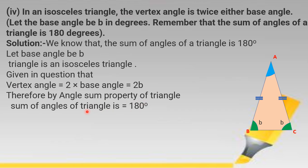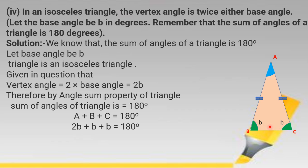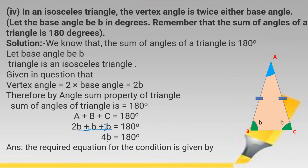By the angle sum property, the sum of the three angles of the triangle is 180 degrees: angle A plus angle B plus angle C equals 180 degrees. Since angle A equals 2B and both base angles equal B, we write 2B plus B plus B equals 180 degrees. This gives 4B equals 180 degrees. So this is the required equation for the given condition.